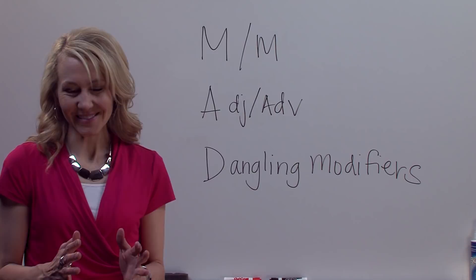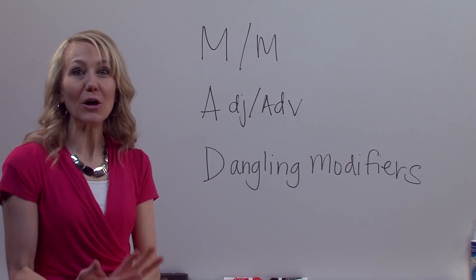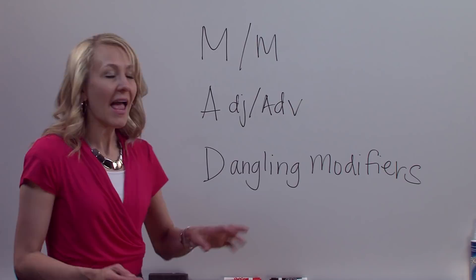There are three ways that we're going to evaluate modifiers — three rules that gauge how we do that evaluation. The first is M: modifiers need to be close to the words that they modify. The second is that you've got to correctly use adjectives and adverbs, which are modifier words.